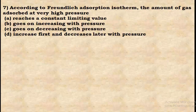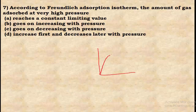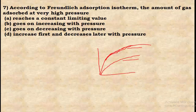Question 7: According to the Freundlich adsorption isotherm, the amount of gas adsorbed at very high pressure — from the graph, adsorption initially increases with pressure but reaches a constant limiting value at high pressure. So option A is correct: it reaches a constant limiting value.